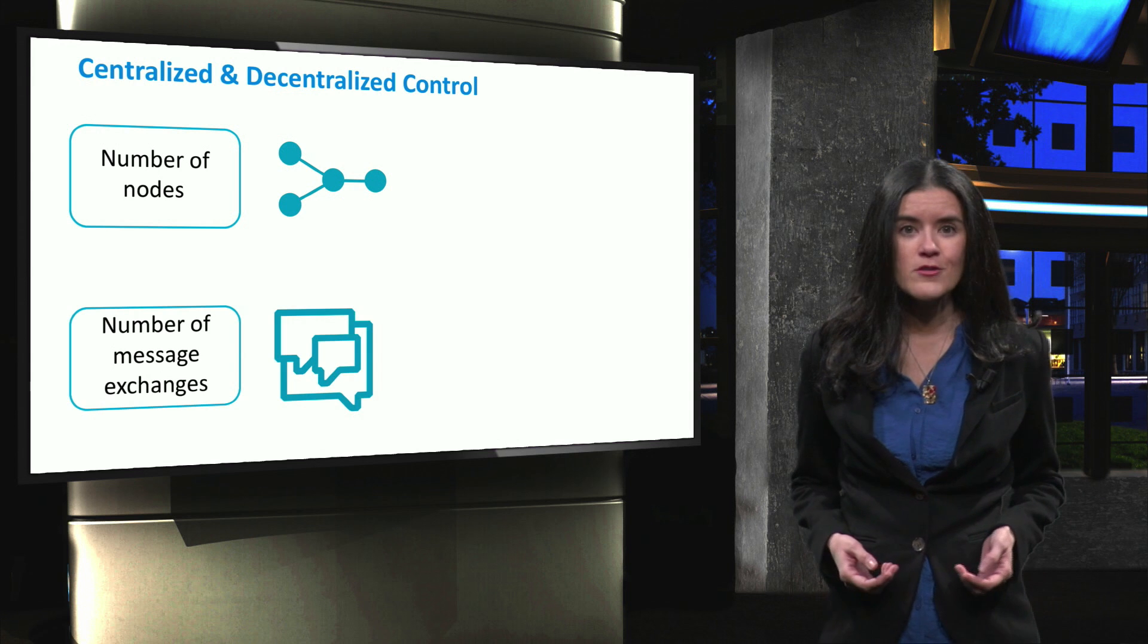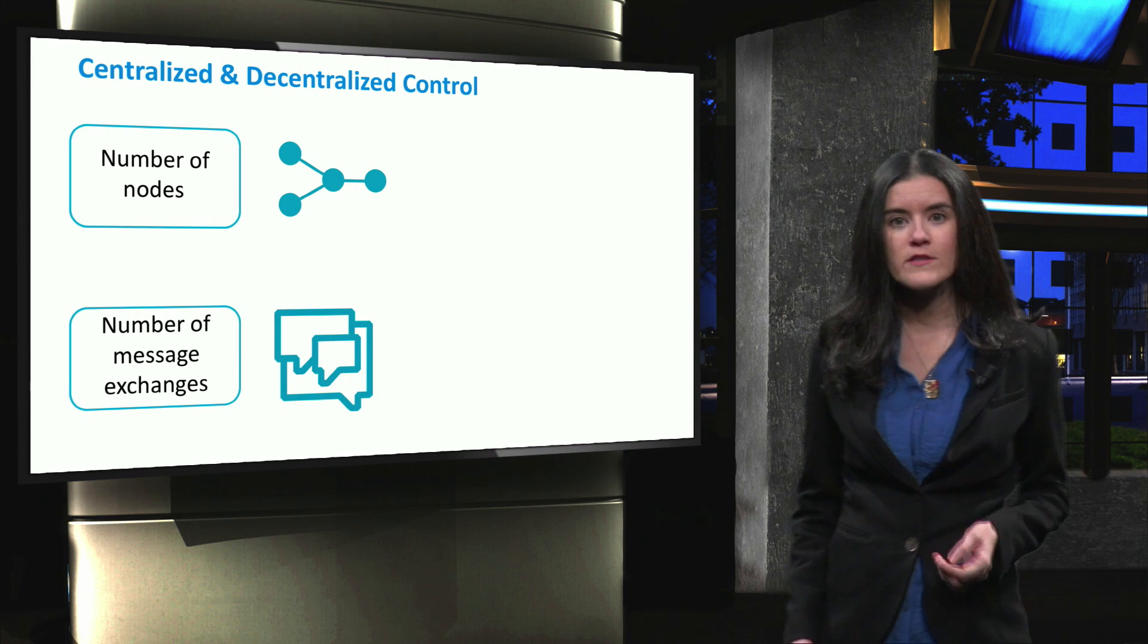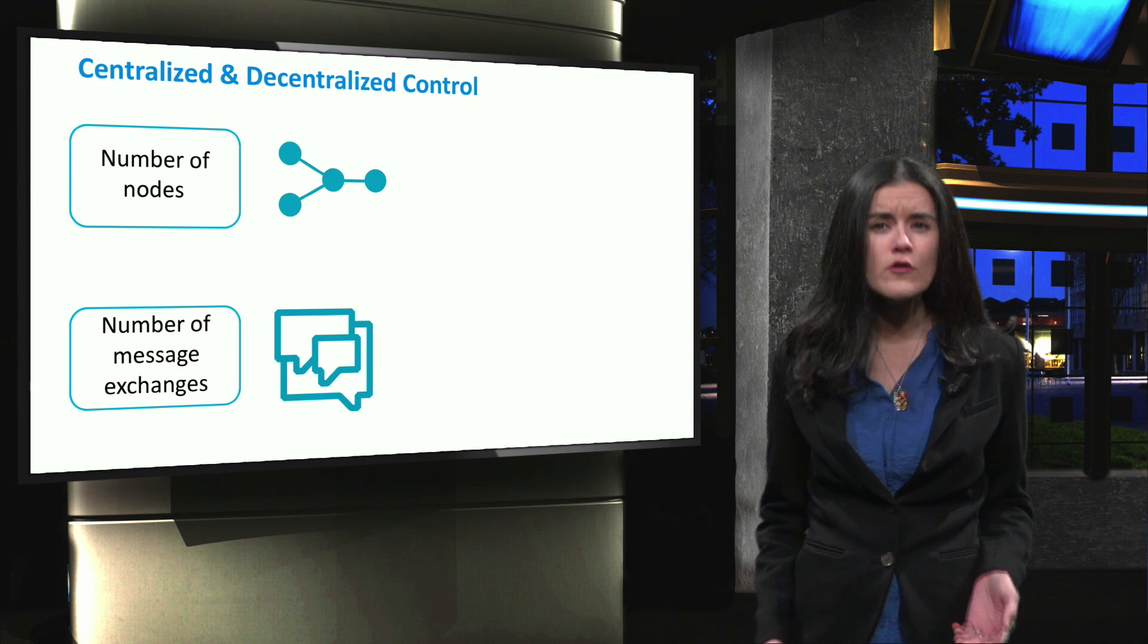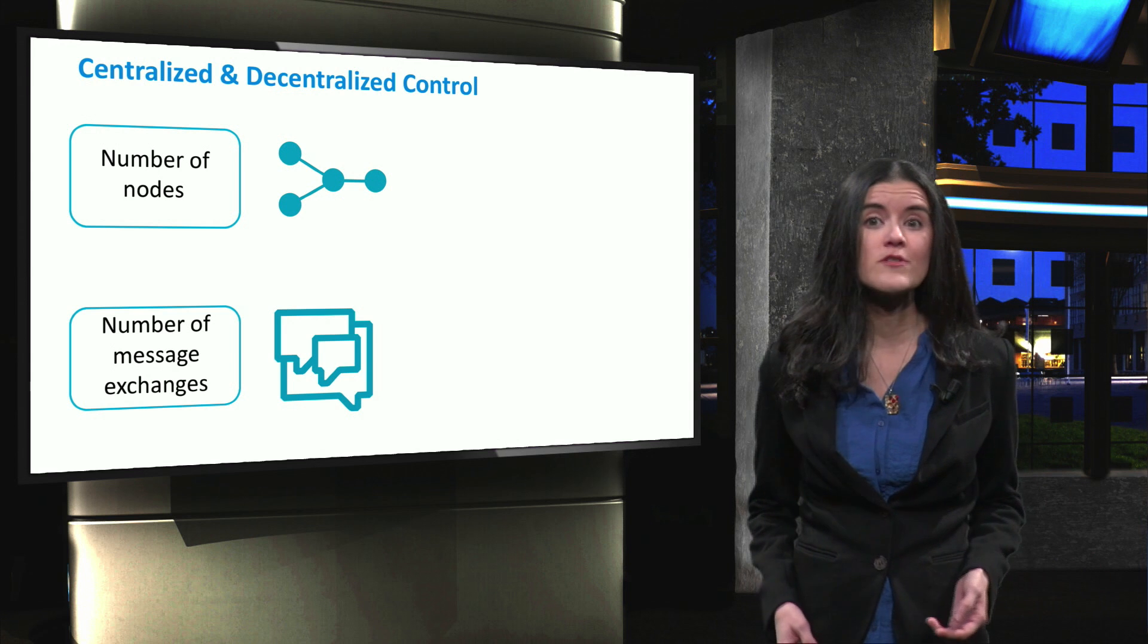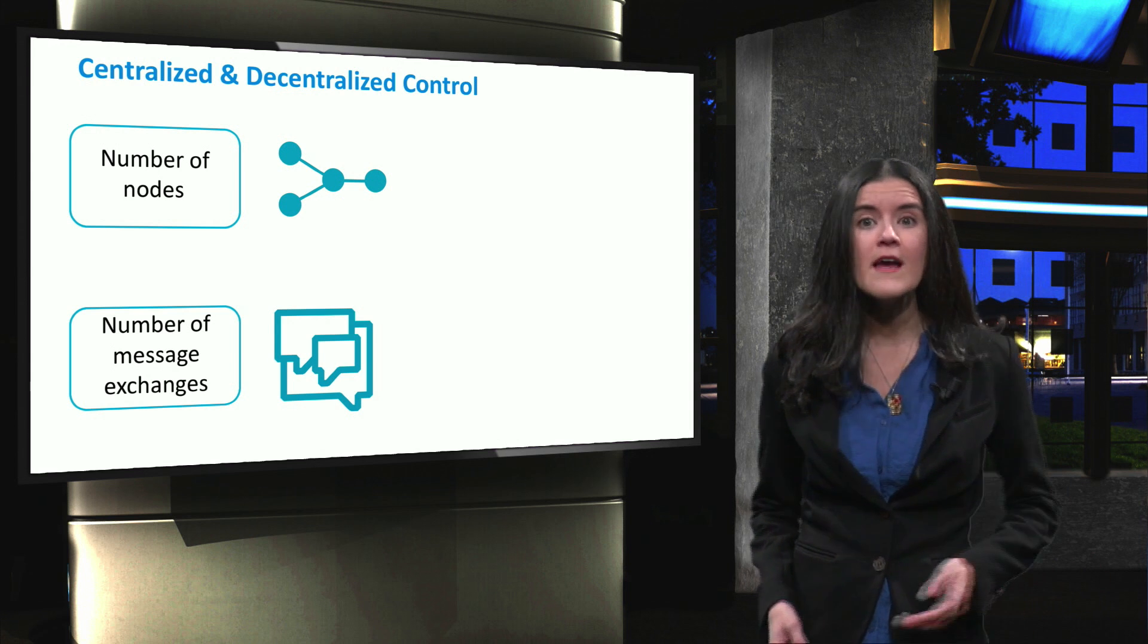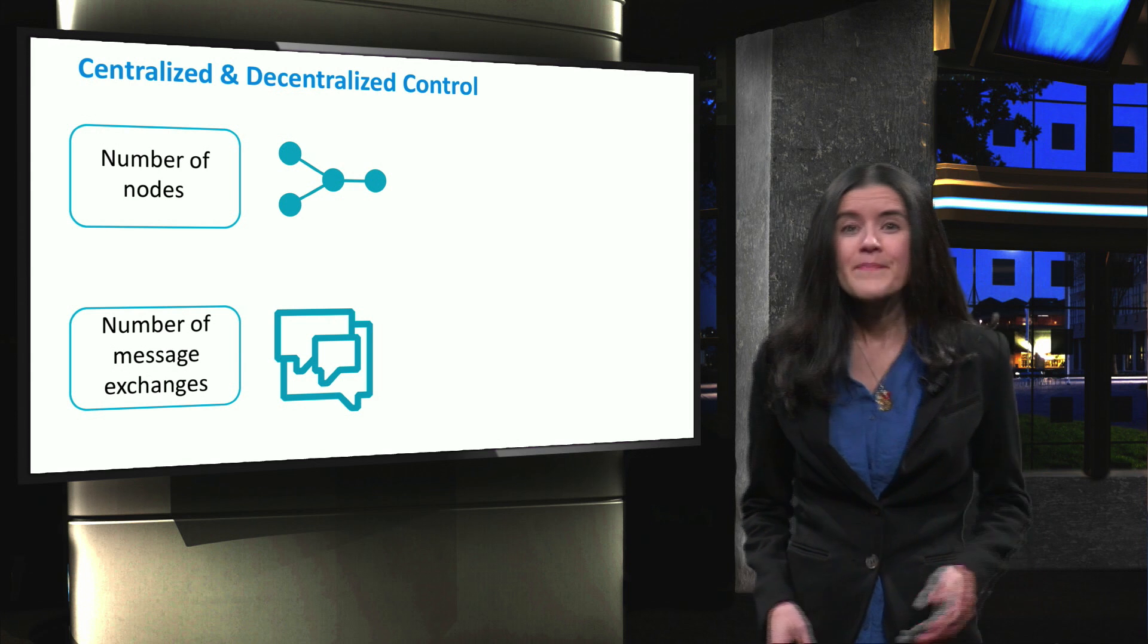Second, the number of messages exchanged. The distributed generators and loads in microgrids are usually dispersed, and the communication systems at low voltage usually have limited bandwidth.